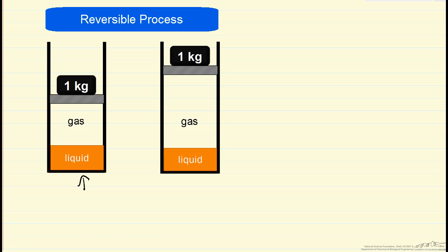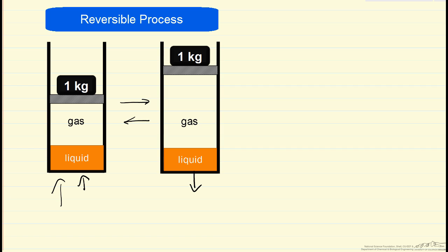As we continue to add heat, we maintain vapor-liquid equilibrium with no pressure gradients and no temperature gradients. So this process is reversible — at any time we can start going in the other direction. If instead we start removing heat from the system, we'll gradually return to the initial state. Every step of the way is in equilibrium. Vapor-liquid equilibrium of a single component at constant pressure is a very good practical example of a reversible process.